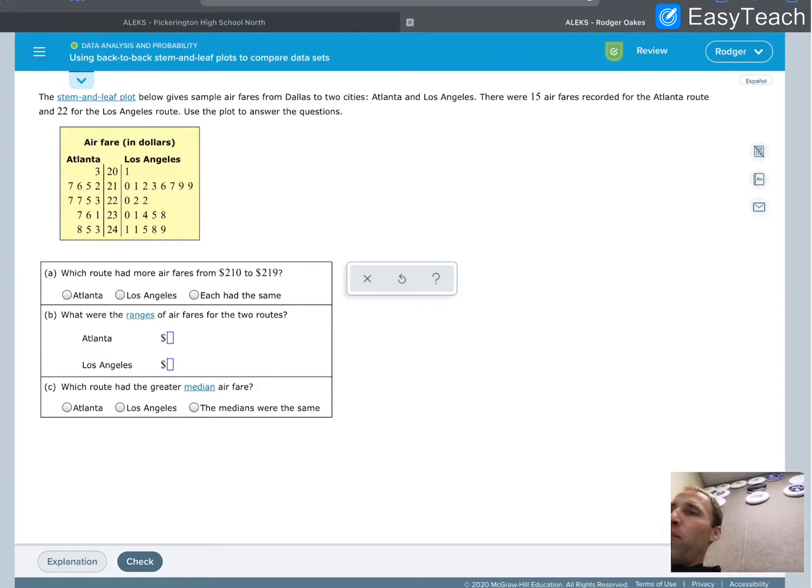The stem and leaf plot below gives sample airfares from Dallas to two cities, Atlanta and Los Angeles. There were 15 airfares recorded for the Atlanta route and 22 for the Los Angeles route. That's going to be information we'll want later on.